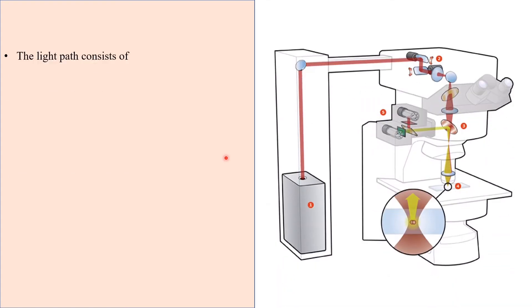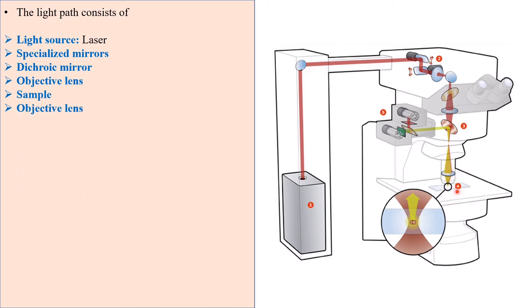Now let's talk about the light path. The light path consists of the light source or laser, specialized mirrors, dichroic mirror, objective lens, sample, again objective lens, dichroic mirror, emission filter, ocular lens, and detector.